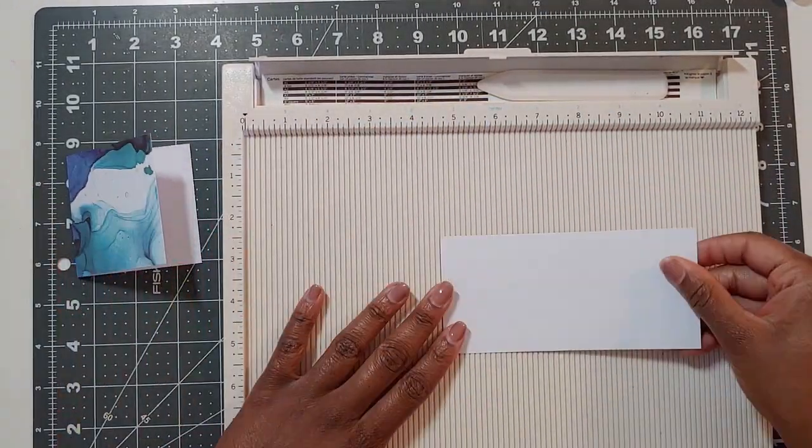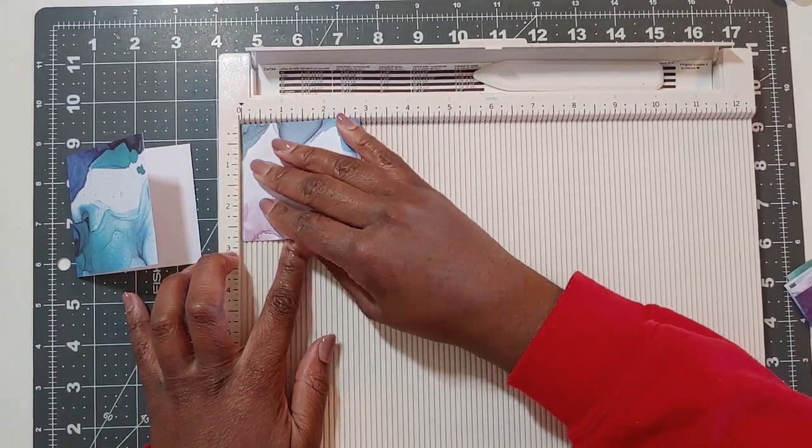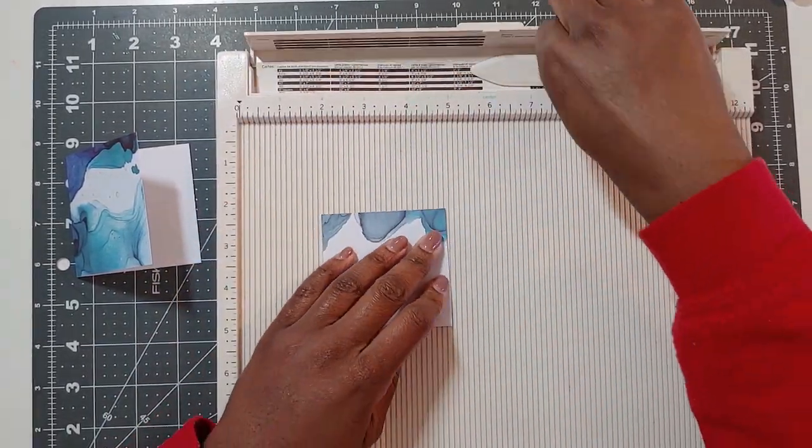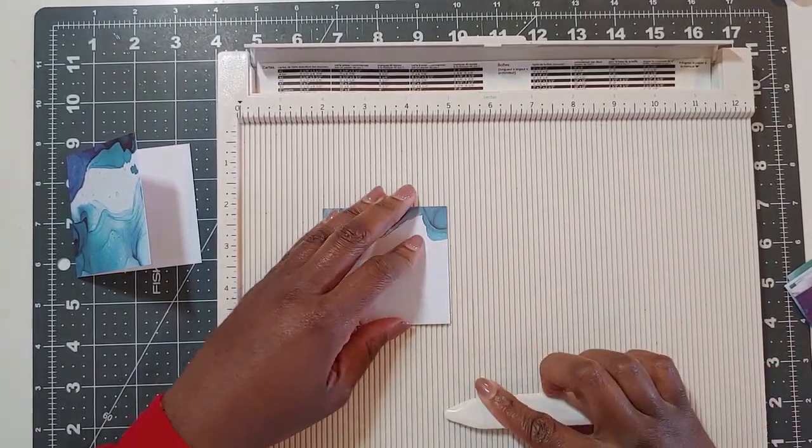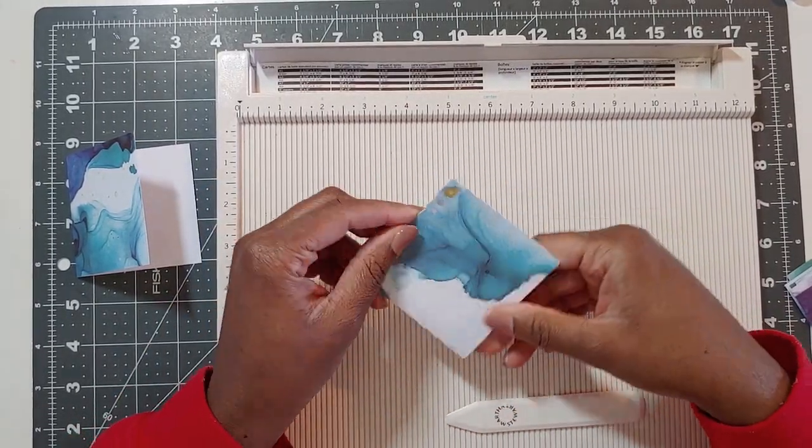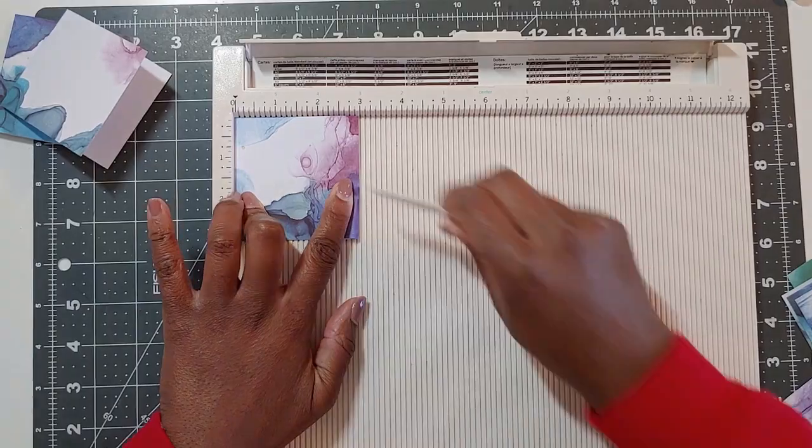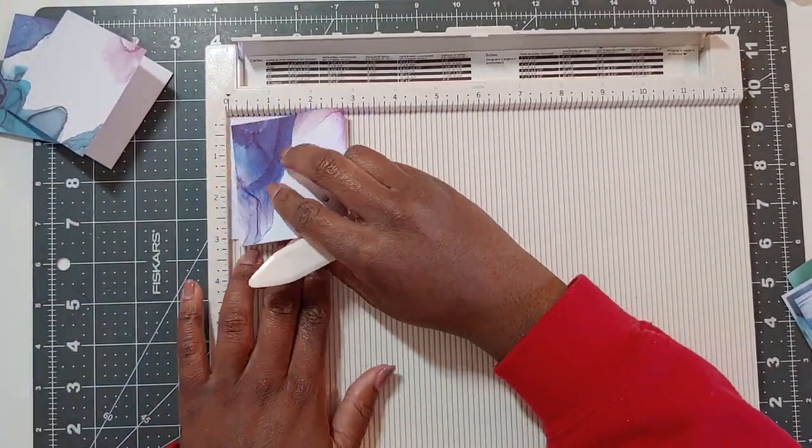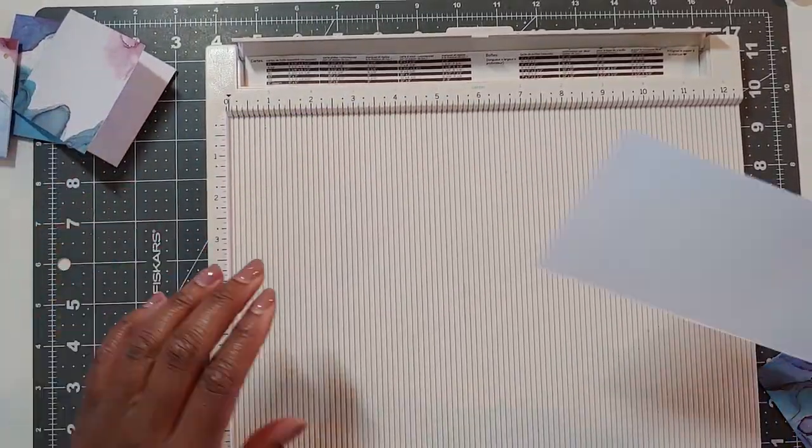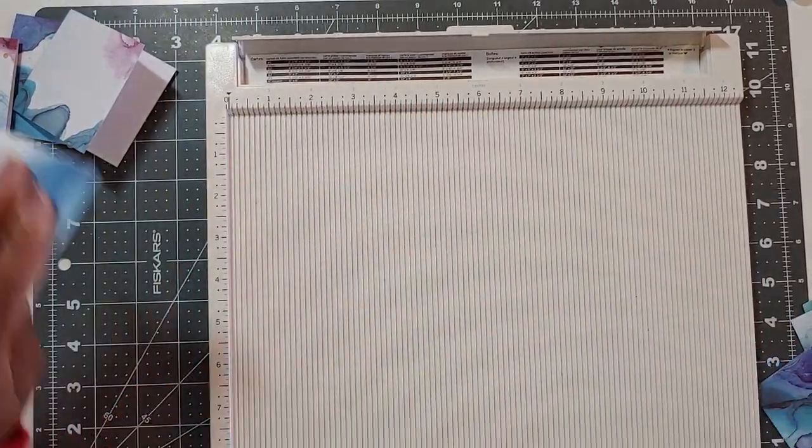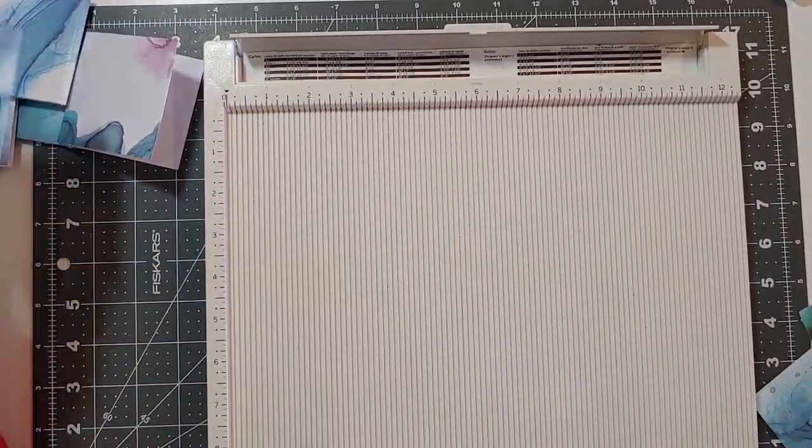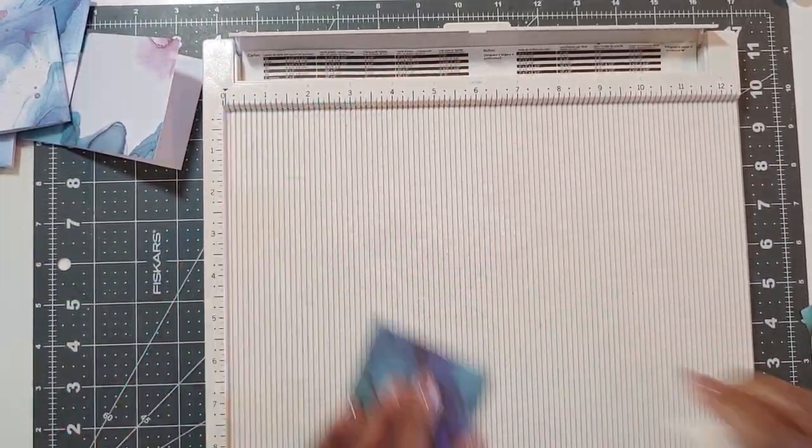You'll see there it wasn't completely even so I changed to just using the corner of my scoreboard to get even edges on my little mini note cards there. Nice and simple. And that's all you have to do to make your eight note cards. So that part is pretty easy and that bit goes pretty quickly.